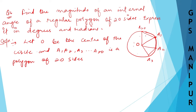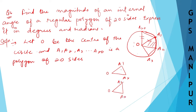The idea here is that each triangle — like triangle OA1A2 and triangle OA2A3 — will be equal. The sides OA1, OA2, and OA3 are all equal because they are radii of the circle. Radius will be the same.